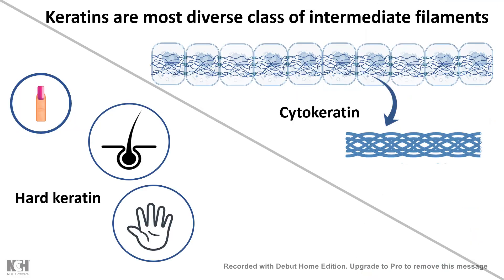Keratins are the most diverse class among intermediate filaments. There are hard keratins present in our hair, nails, and glabrous skin. There are also cytokeratins present in our dermis and epidermis cells, which also give mechanical support to the skin.